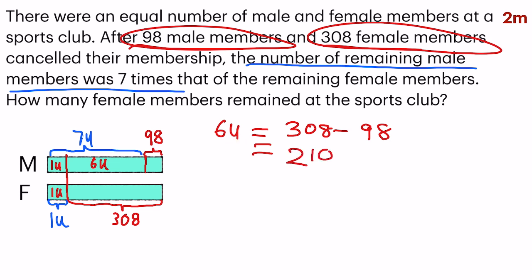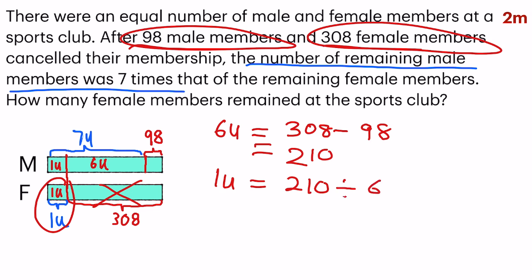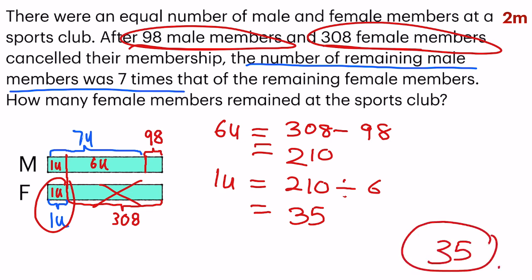So to find six units, you take 308 subtract 98, which gives you 210. So six units is equal to 210. They ask how many female members remain at the sports club — 308 left, and there's only one unit of female that remained. So my last step would be finding one unit, which is 210 divided by six, which gives 35. So only 35 female members remained at the sports club, and that's my final answer.